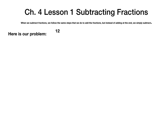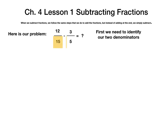Here's our problem: 12 fifteenths minus 3 fifths. We need to figure out what that is. First, we need to identify our two denominators. Our two denominators are 15 and 5.